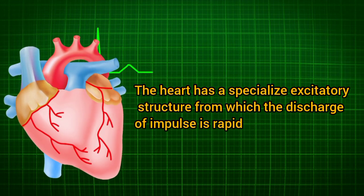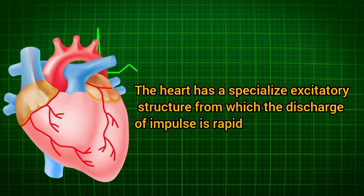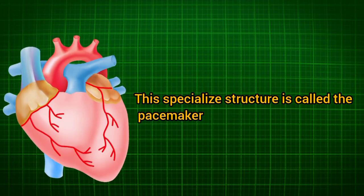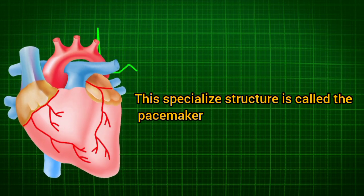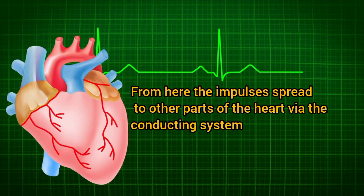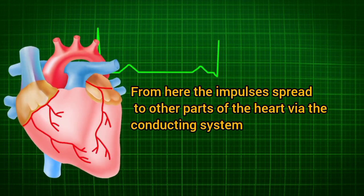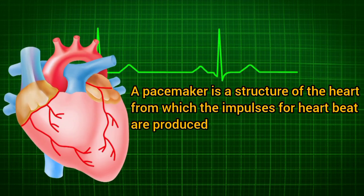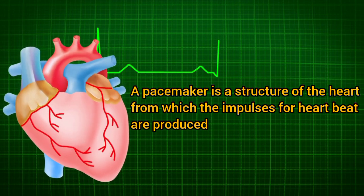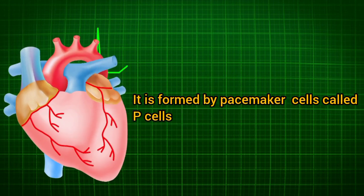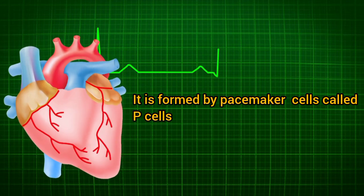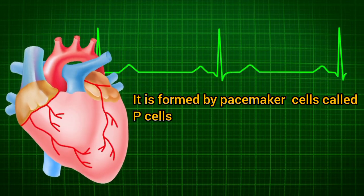The heart has a specialized excitatory structure from which the discharge of impulses is rapid. This specialized structure is called the pacemaker. From here, the impulses spread to other parts through the specialized conductive system. A pacemaker is a structure of the heart from which the impulses for heartbeats are produced. It is formed by pacemaker cells called the P-cells.